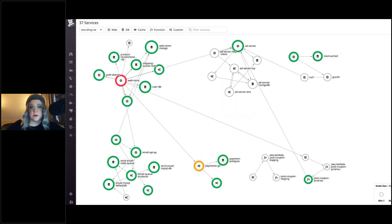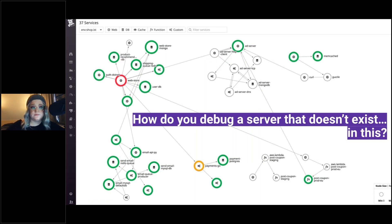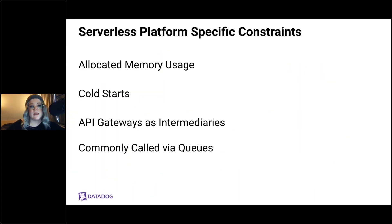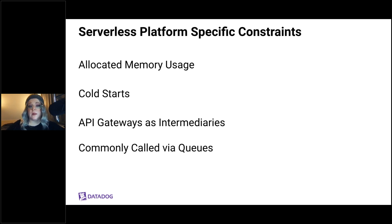Modern infrastructure isn't simple — it's not just a server or two. There are many processes to look at. Serverless has very platform-specific constraints: how much memory do you want to allocate per request, dealing with cold starts which happen when you execute an inactive function — the delay comes from your cloud provider provisioning the runtime container — and dealing with API gateways as intermediaries.